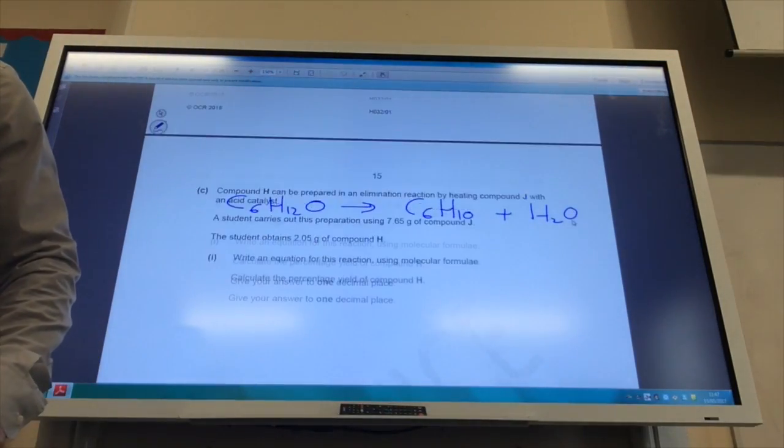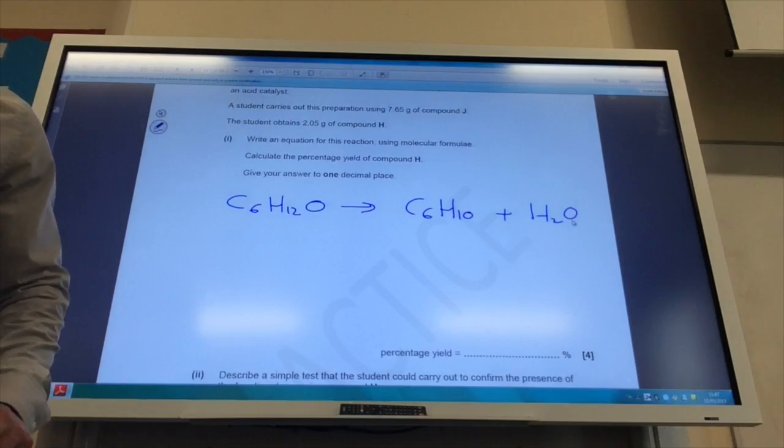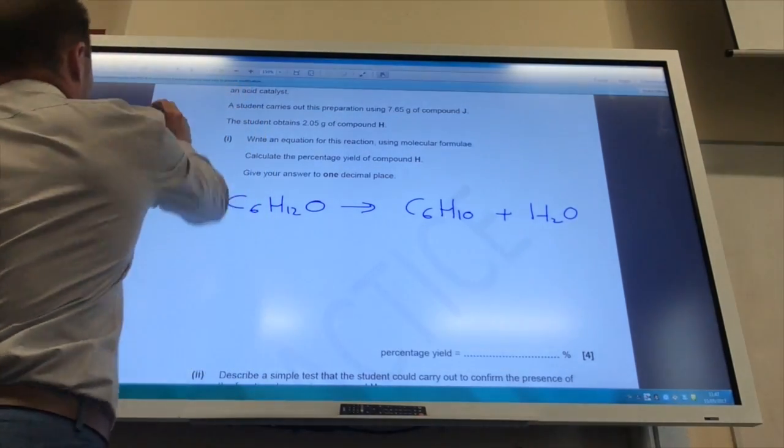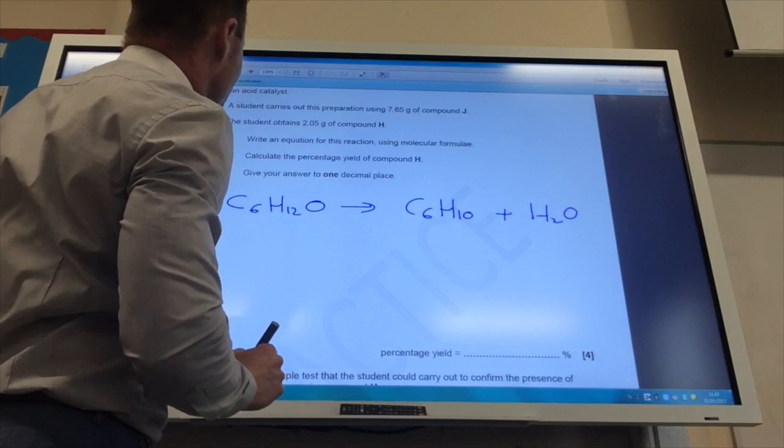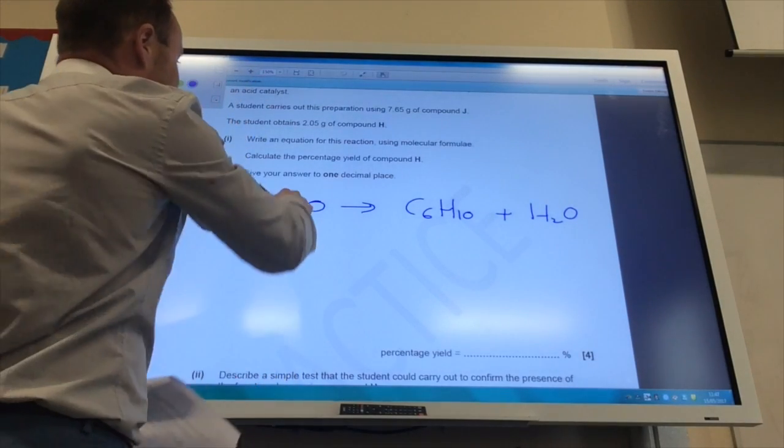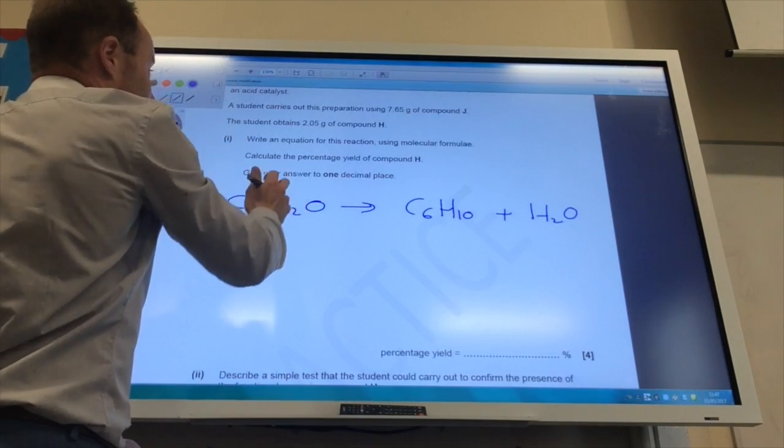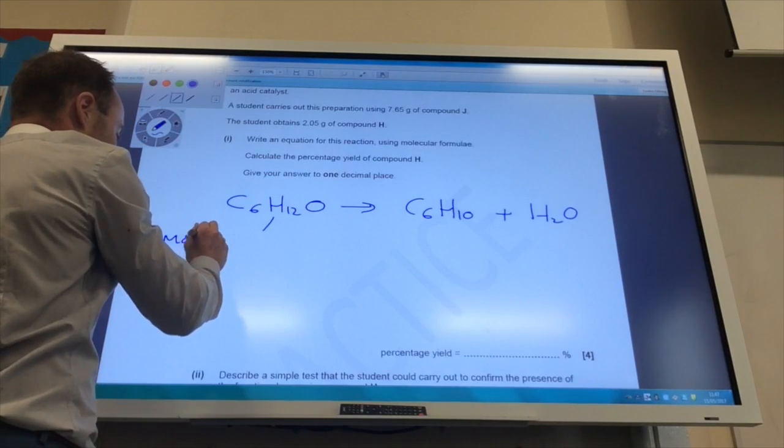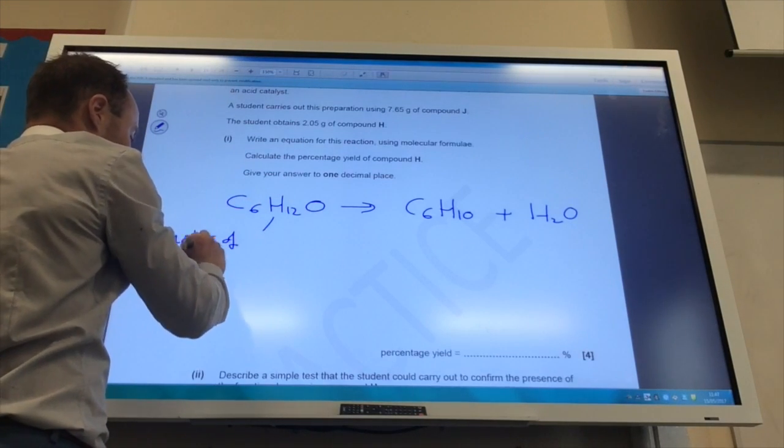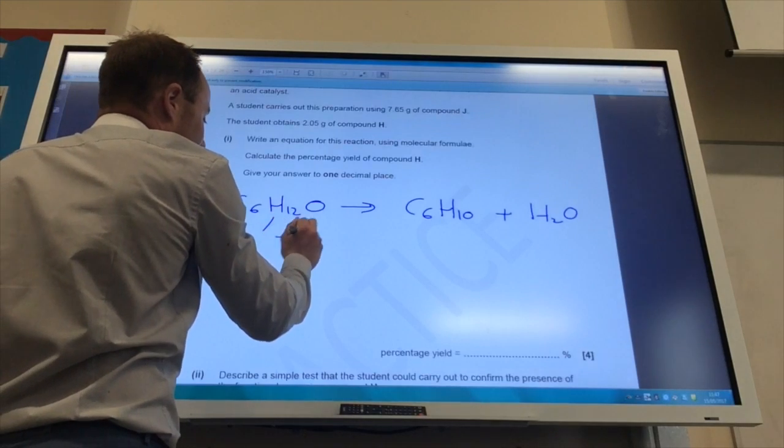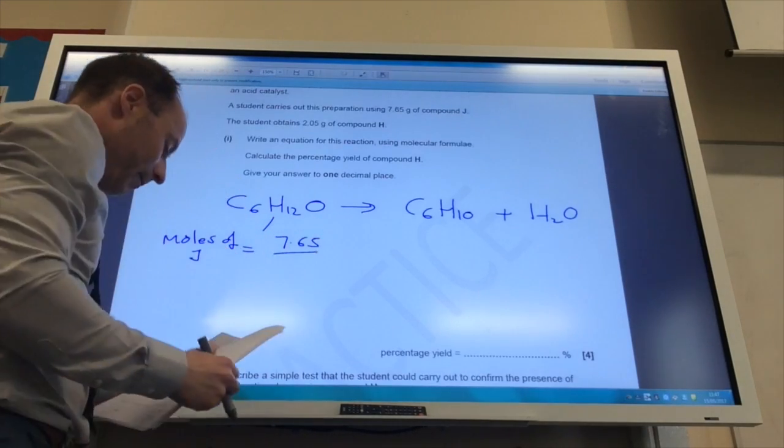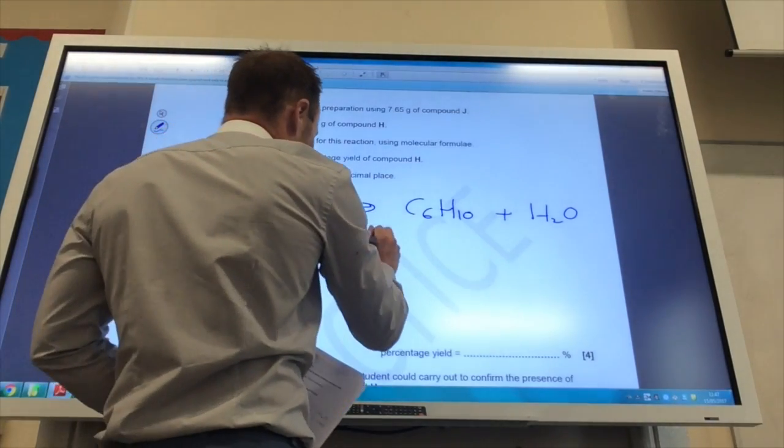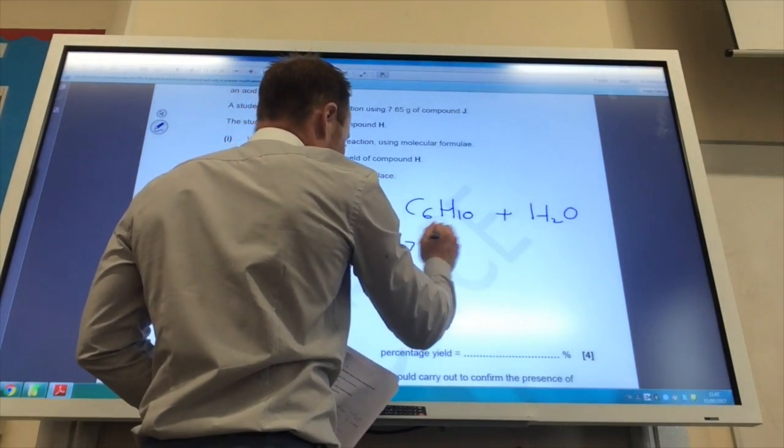I'll move my board back. Okay, so now I need to work out my moles. They say I'm going to start with 7.65 grams of this one. So moles of J is going to equal my mass divided by my molar mass, which is 100, which gives me 0.0765.